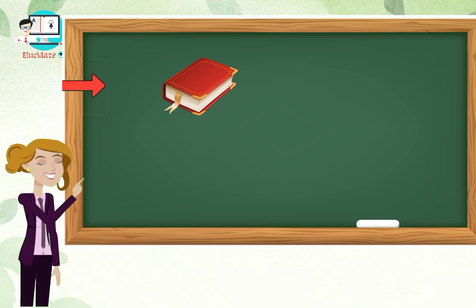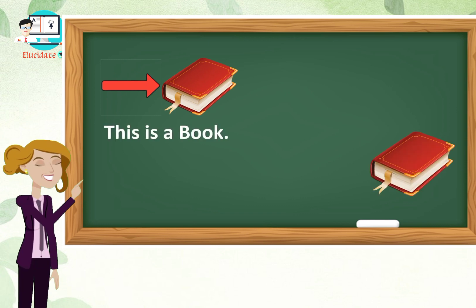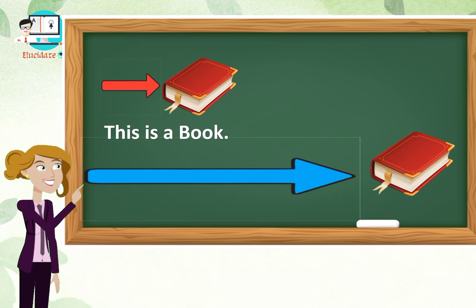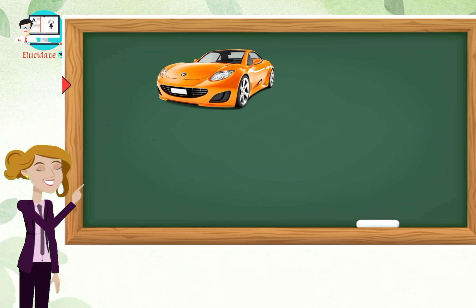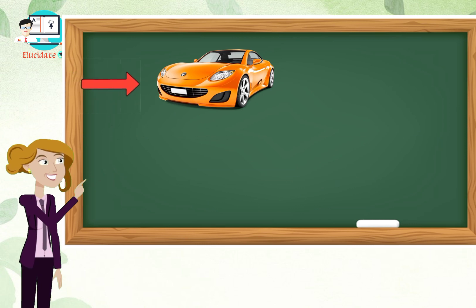This one book is near to a person, so we will say 'this is a book.' And that one book is far from a person, so we will say 'that is a book.'